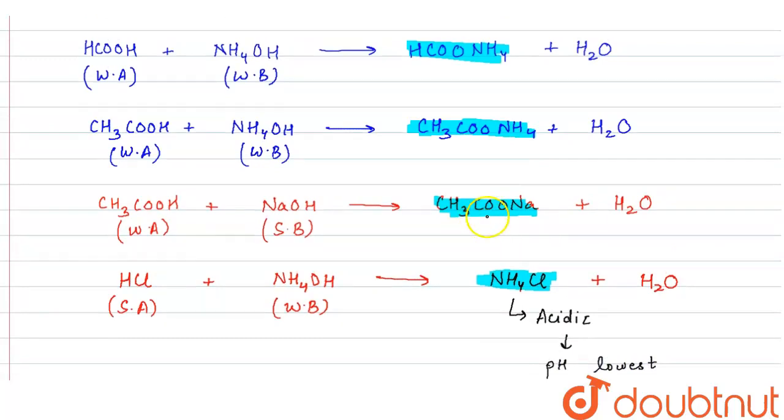If we look at CH3COONa, it is a salt of weak acid and strong base. Here we have a strong base, so it has basic nature. Since it has basic nature, so it will be having highest pH.